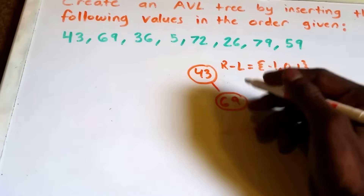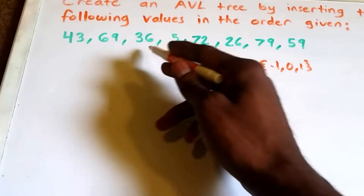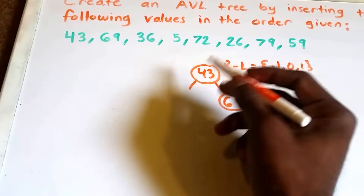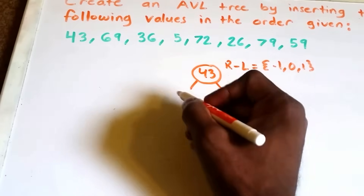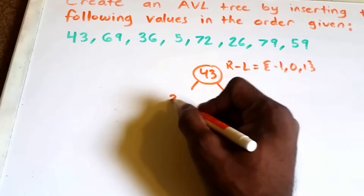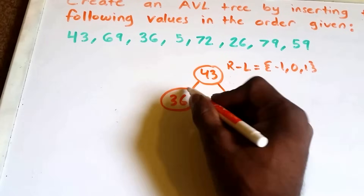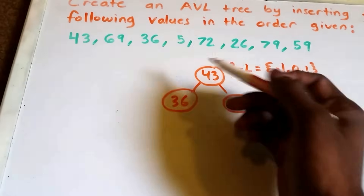Now let's insert the value 36. Since 36 is less than 43, we insert it to the left of the tree, and our tree is still balanced.